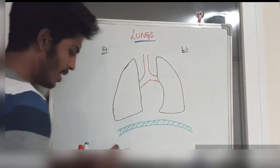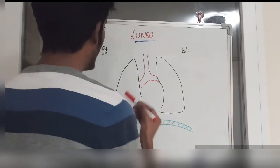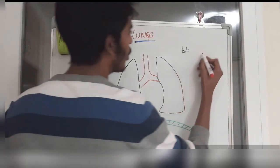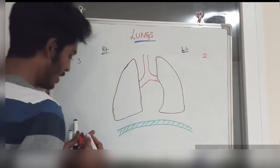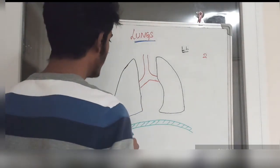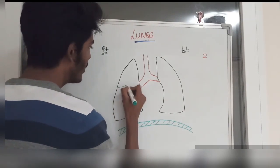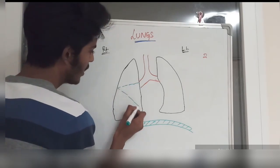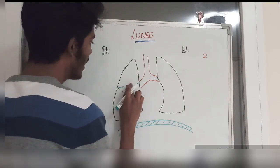Every lung has lobes. The right lung has three lobes and the left lung has two lobes. These lobes are divided by lines called fissures — an oblique fissure and a horizontal fissure. These fissures are important because they divide the lungs into lobes.